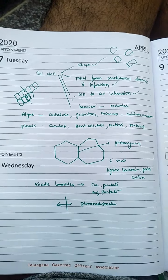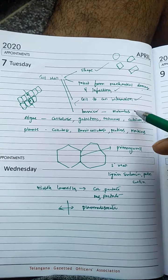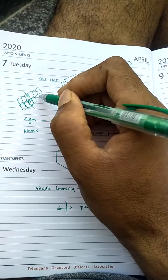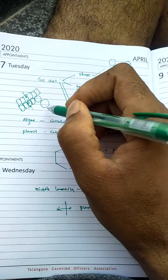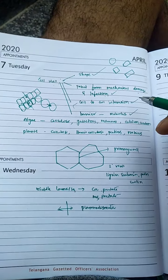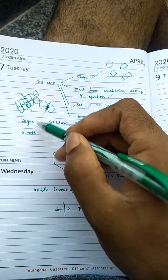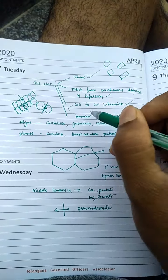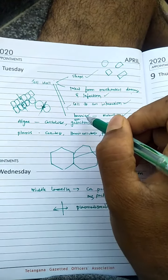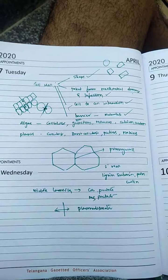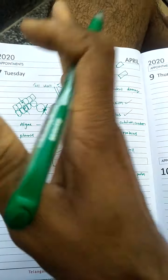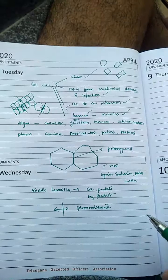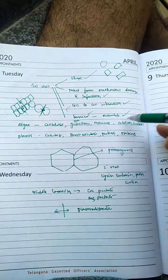The cell wall also acts as a barrier. The transport of materials from one cell to another cell is allowed through the cell wall only. Because of this barrier action, certain materials are unable to pass freely from one cell to another. These are the different functions of the cell wall.